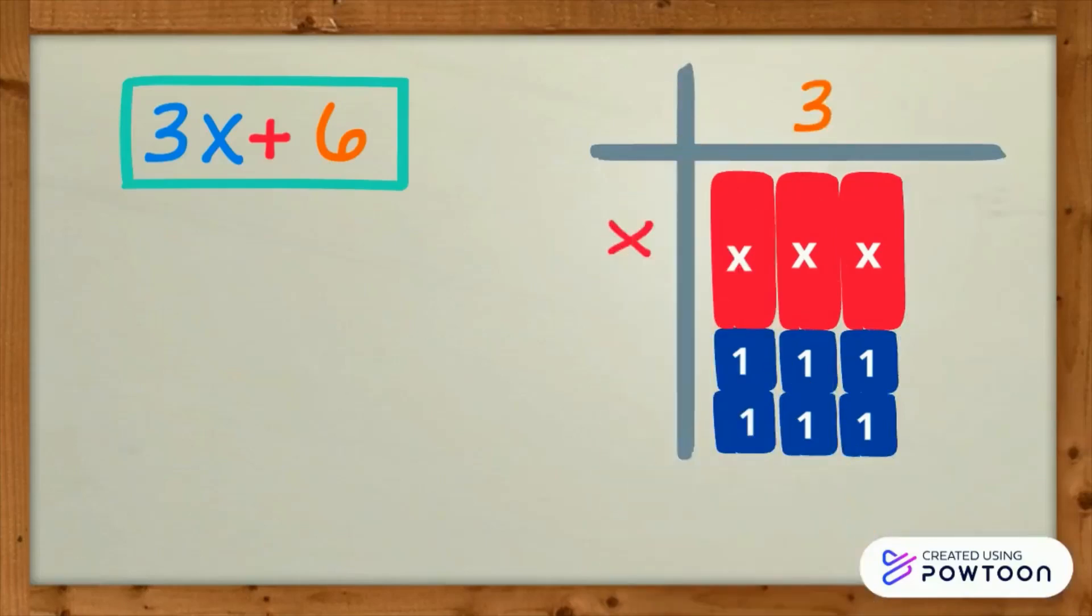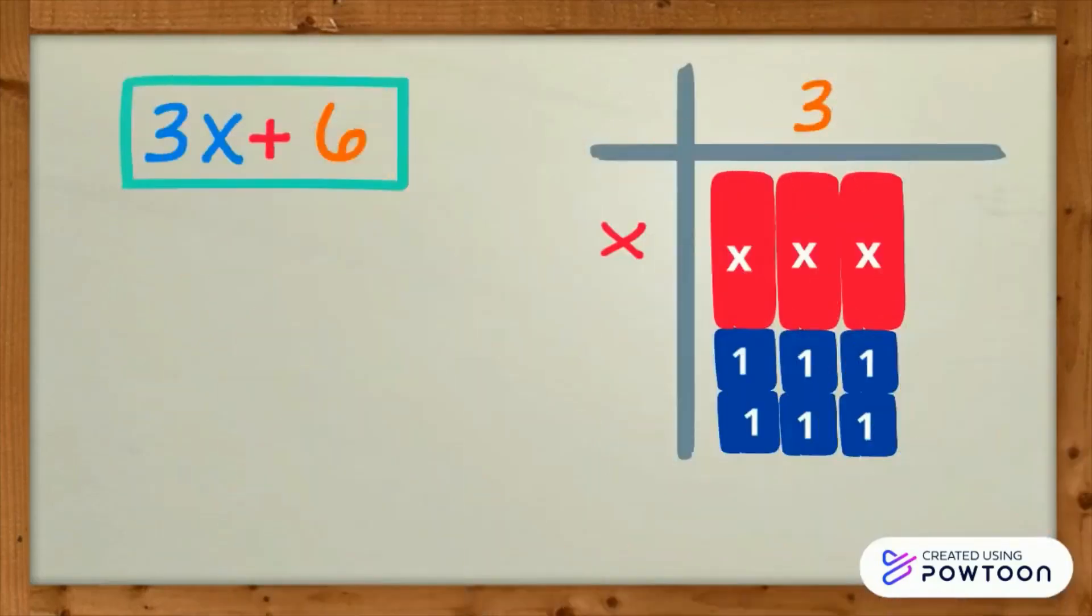2x. We consider the blue ones positive. That is why we have a plus sign. Then, how many 1 units are there on the side? 2, right? Therefore, the factors of 3x plus 6 are 3 quantity x plus 2.